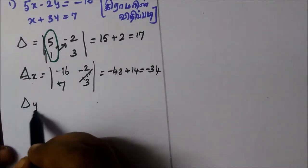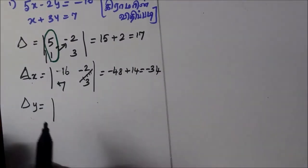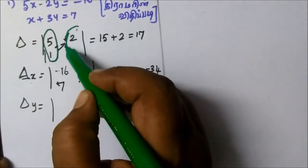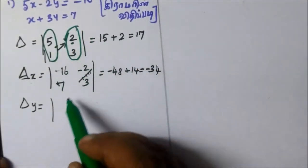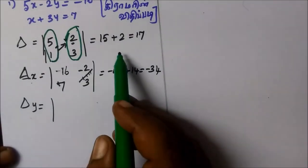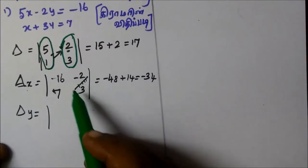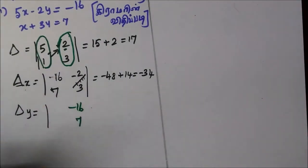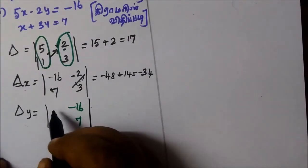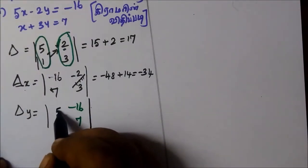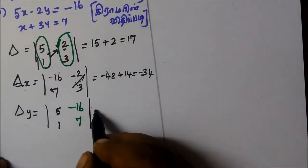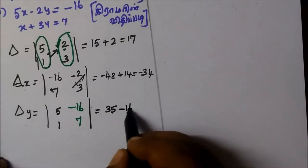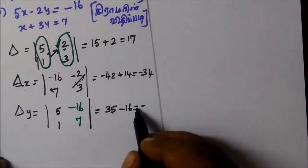If you want to use del y, del y is placed in the second column. In the second column, we have the constant: minus 16, then 7. This is the same as it is. In the first column, as it is. The first column is 5, then 1. We have the constant. It is the same as it is.